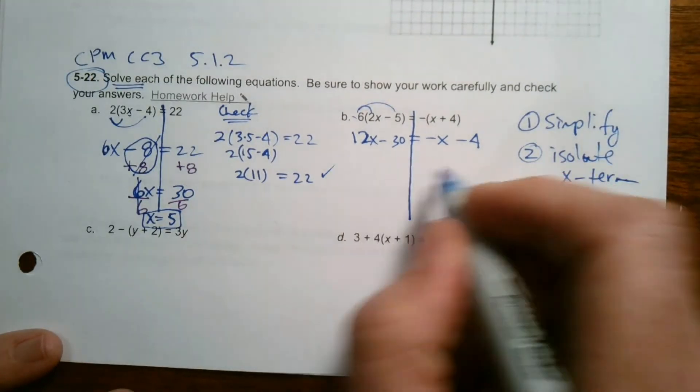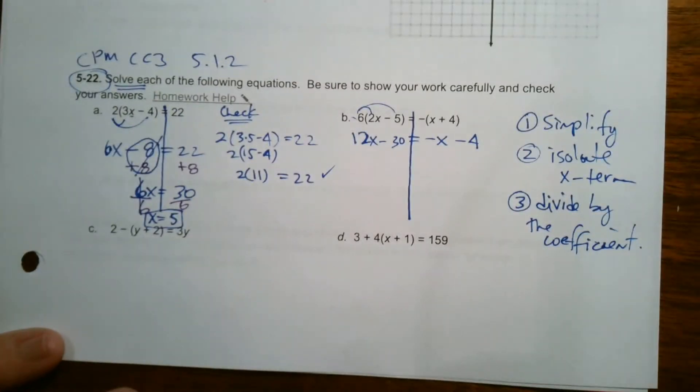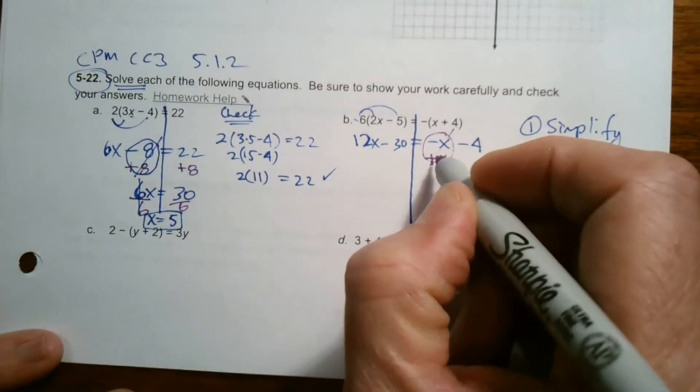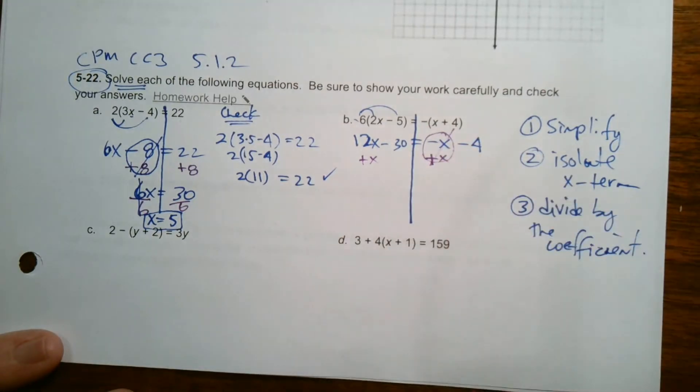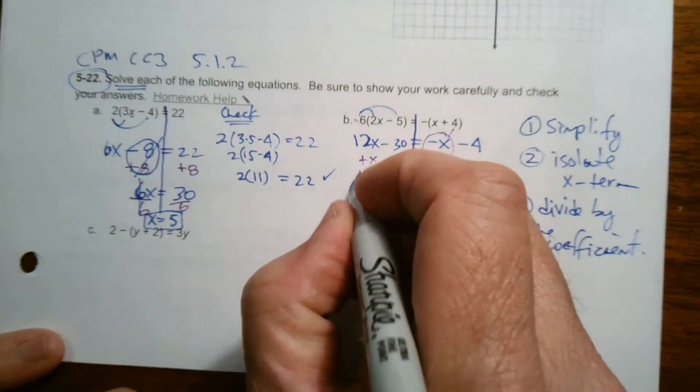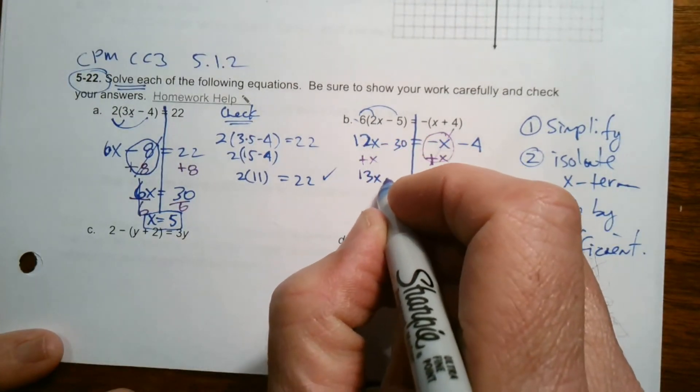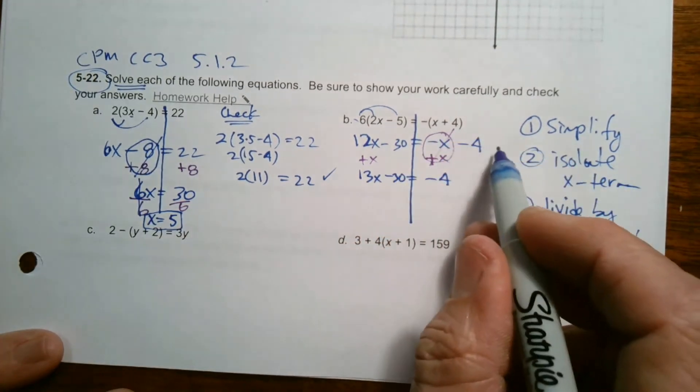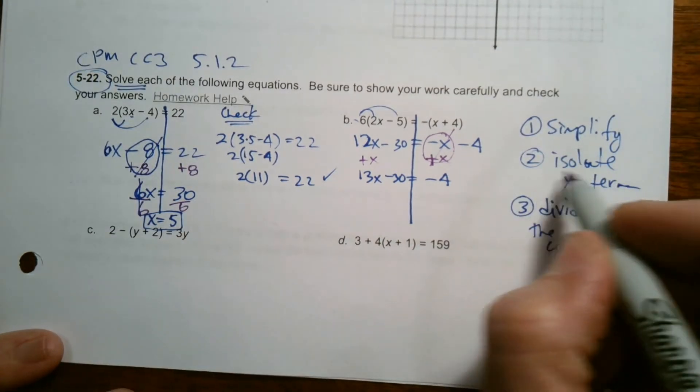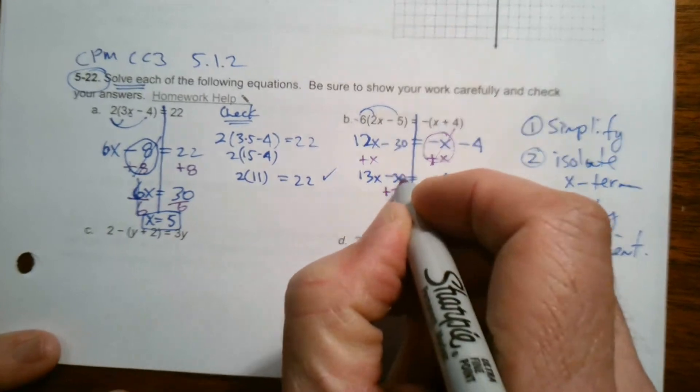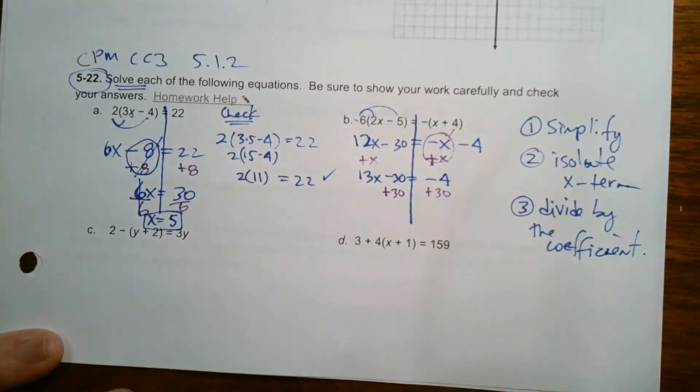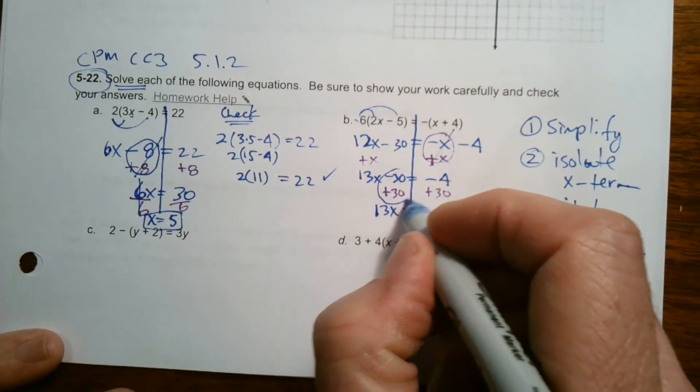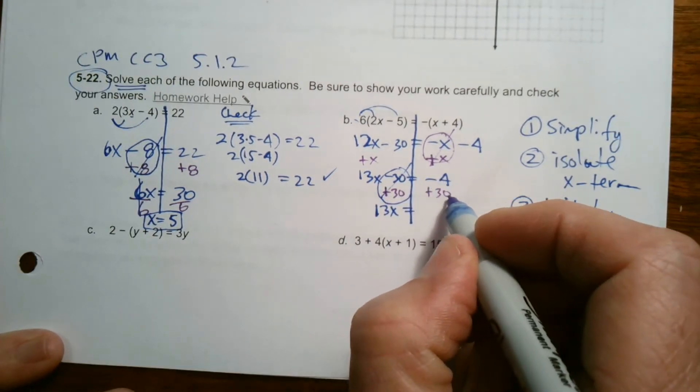So isolate the X term. That means get all the X's on one side and all the numbers on the other. So I want the X term all by itself. So I'm going to add X from this side. I'm going to do a positive X because if it's a negative X, positive X makes that go to zero. And over here as well. So now I have, over here I have 13X. When you add one X to 12 you get 13, 13X minus 30 equals over here I have a negative four that's left because that went to zero, zero minus four is negative four. Then still got to isolate, I'm still on step two, isolate the X term. So add 30 because that's the opposite of minus 30. Add 30. So now I have 13X is equal to, because I added 30 and that negative 30 and 30 canceled, and then negative four and positive 30 is 26.